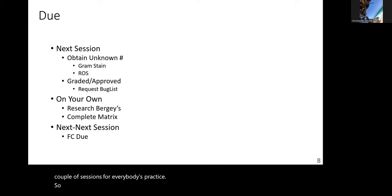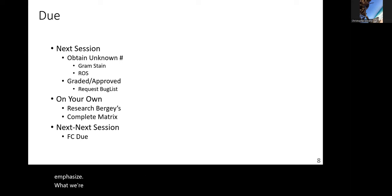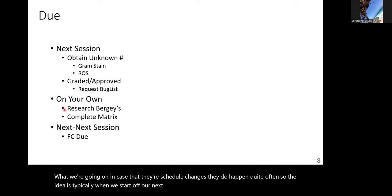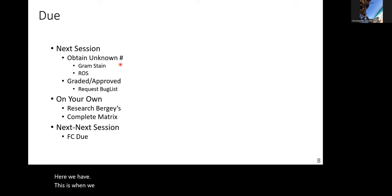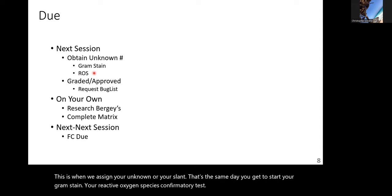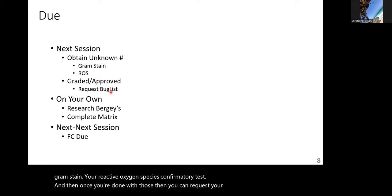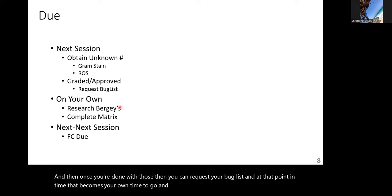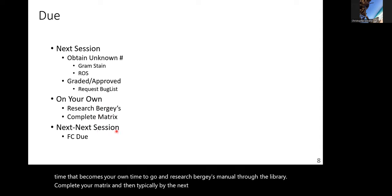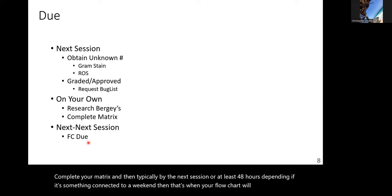To remind you of the schedule — and changes do happen: on the next session, we assign your unknown or your slant. That same day you start your Gram stain and reactive oxygen species confirmatory test. Once done, you can request your bug list and begin researching Bergey's Manual through the library to complete your matrix. Typically by the next session, or at least 48 hours depending on the weekend, your flowchart will be due.